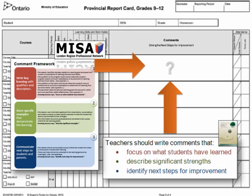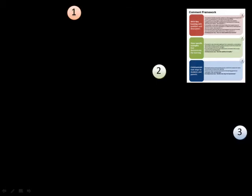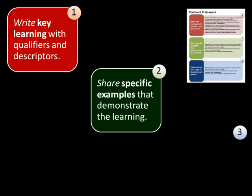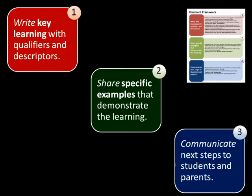The comment framework, developed from Growing Success 2010, assists teachers in composing personalized comments on report cards. The comment framework provides a common process for creating comments that reflect the intent of Growing Success. There are three components in this framework: write key learning with qualifiers and descriptors developed from a cluster of expectations which focus on what students have learned; share specific examples that demonstrate learning by describing significant strengths of the student's work; and communicate next steps to students and parents that will identify strategies for improvement.